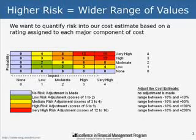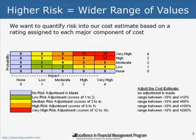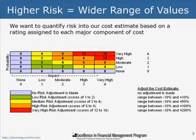We'll assign risk ratings for different components of our cost estimate. The higher the risk rating, the wider the range of possible values for that cost component. For example, if you have no risk at all, there would be no risk adjustment. But if you have an extremely high risk, you could have a cost estimate that might be 10% below the single-point estimate on the low end, but could be as high as 200% of the single-point cost estimate.